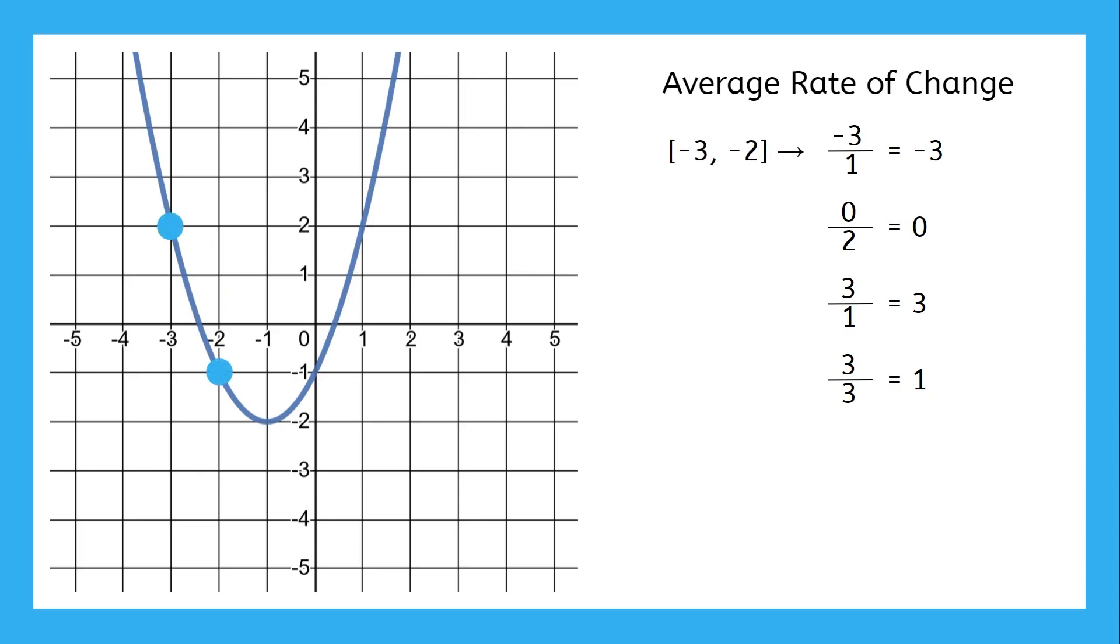On the interval from negative three to negative two, the average rate of change is negative three. From negative two to zero, the average rate of change is zero. From zero to negative one, it's three. And from negative two to one, it's one. Average rate of change is a way to measure how quickly something changed on average over the course of an interval. It's incredibly useful in many different jobs and contexts, but we'll talk more about that in the next video. For now, let's practice calculating average rates of change.